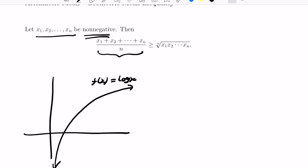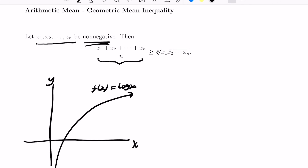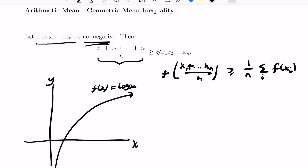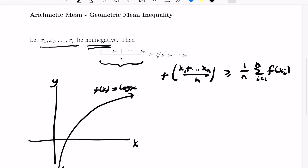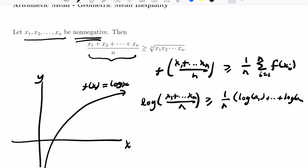If you look at the graph of log x, it does look like the graph is concave. So if we apply Jensen's inequality to f, we have that f at the average of x1 through xn is greater than or equal to the average of the function values. On the left-hand side we get the logarithm of the average of all these values, and on the right-hand side we get 1/n times the sum of the logarithms: log x1 plus log x2 up to log xn.